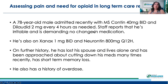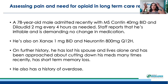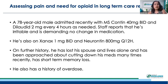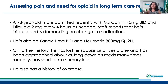The other patient — also a real patient — is a 78-year-old male admitted on MS-Contin 40mg BID and Dilaudid 2mg every four hours as needed. Staff report he's irritable and demanding no change in medication. He's also on Xanax 1mg BID and Neurontin 800mg every 12 hours. On further history, he has lost his spouse, lives alone, has been approached about cutting down his meds several times, has short-term memory loss, and has a history of overdose. Lots and lots of red flags.